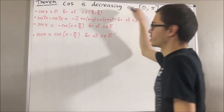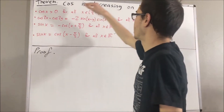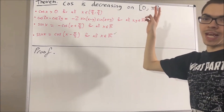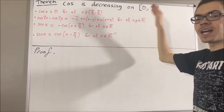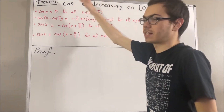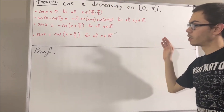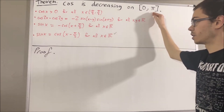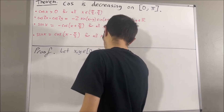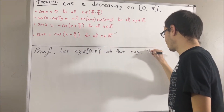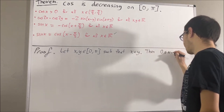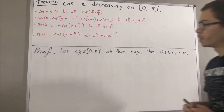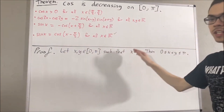Now let's get into proving this theorem. To prove that cosine is decreasing on the closed interval 0 to pi, we want to prove that for every two real numbers x and y in the closed interval 0 to pi, if x is less than y, then cosine of x is greater than cosine of y. So let's give ourselves two arbitrary real numbers x and y in the closed interval 0 to pi such that x is less than y — in other words, 0 ≤ x < y ≤ pi. The goal is to show that cosine of x is greater than cosine of y.